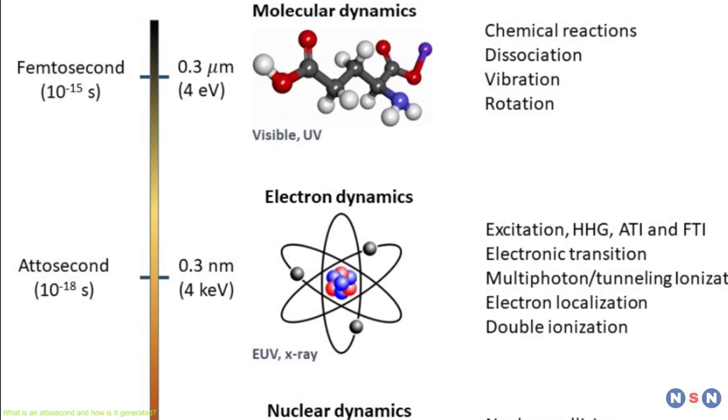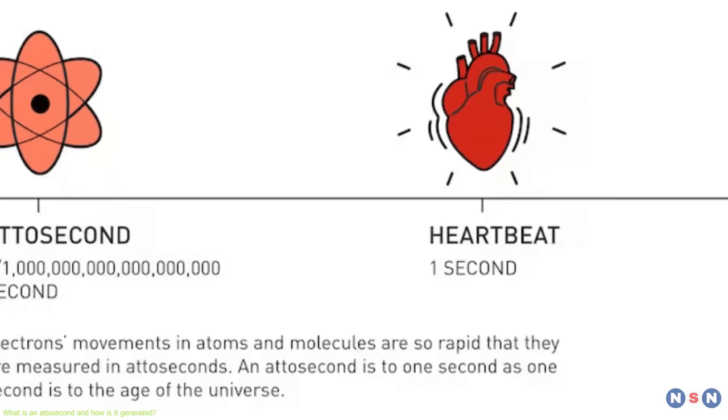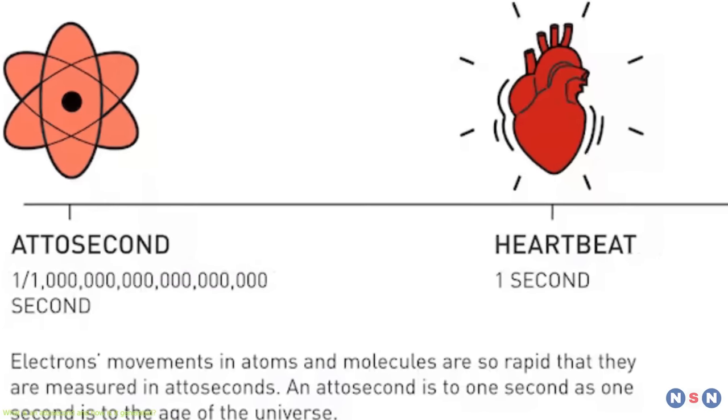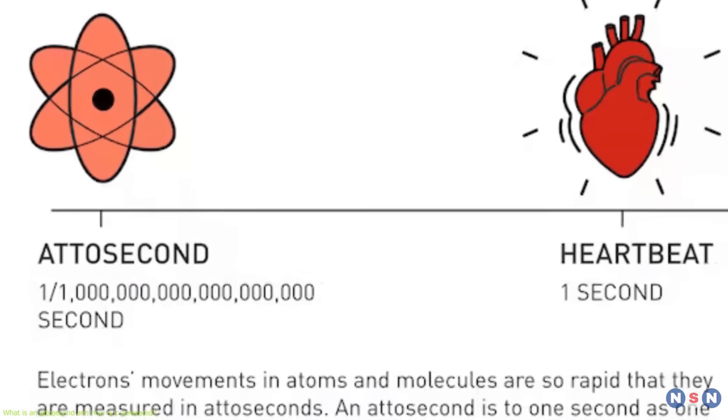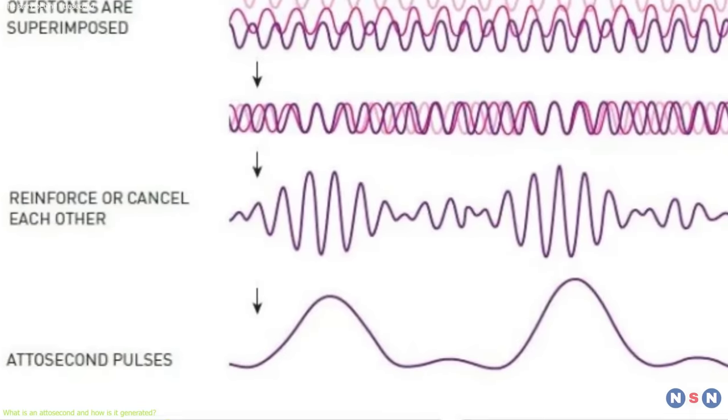An attosecond is 1,000 times shorter than a femtosecond. That means that in one second, there are as many attoseconds as there are seconds in 31 billion years. That's more than twice the age of the universe. So why do we need such a short timescale?